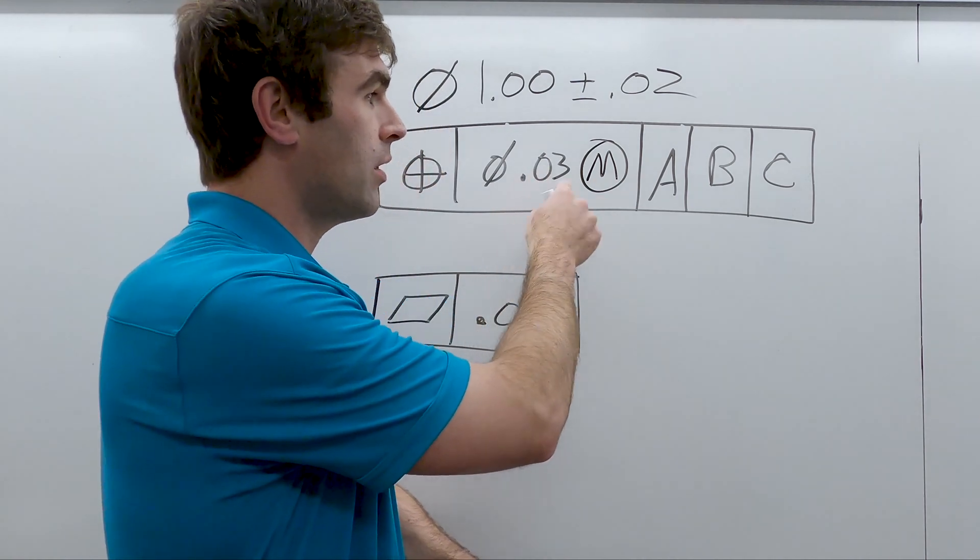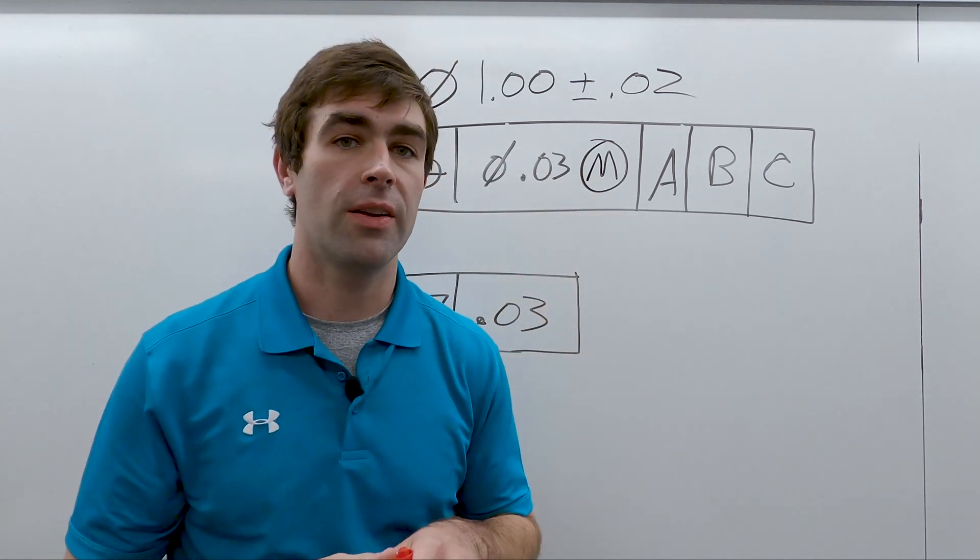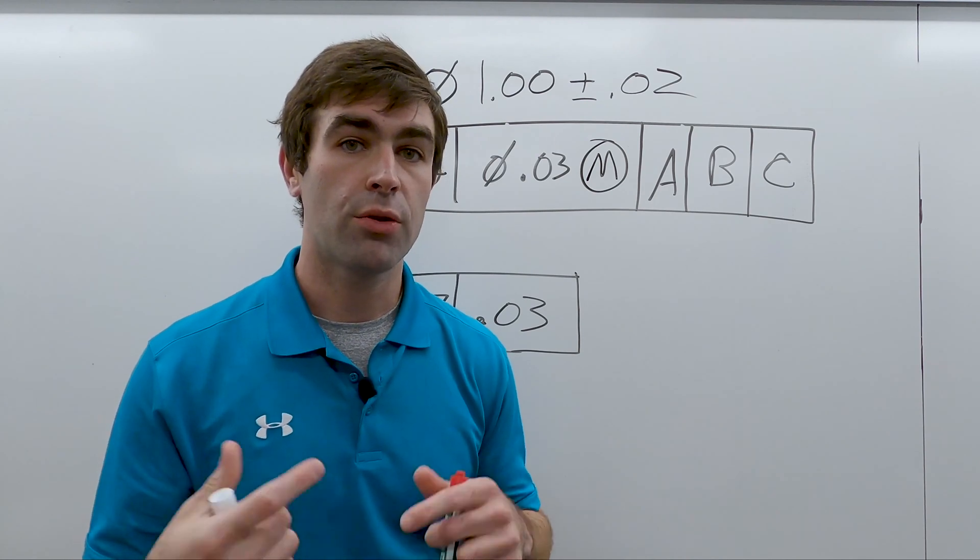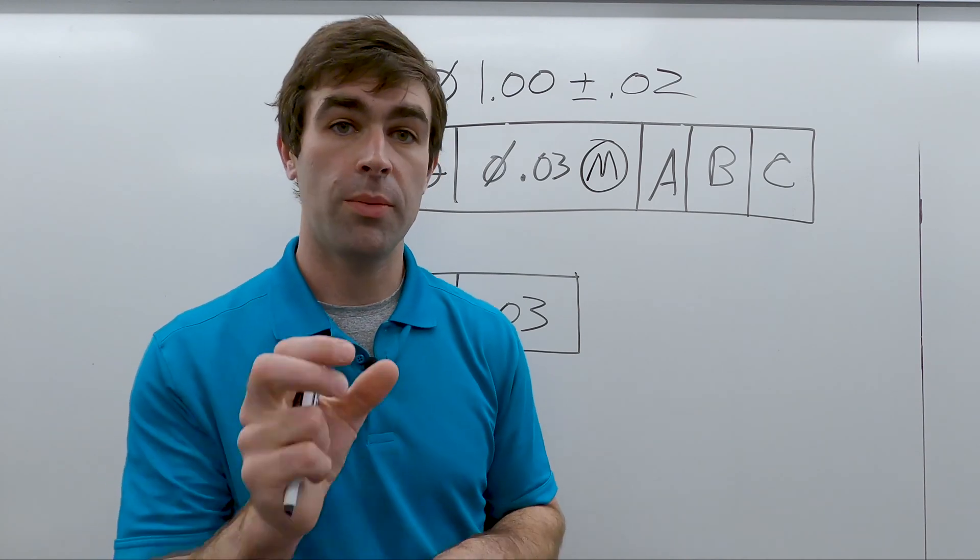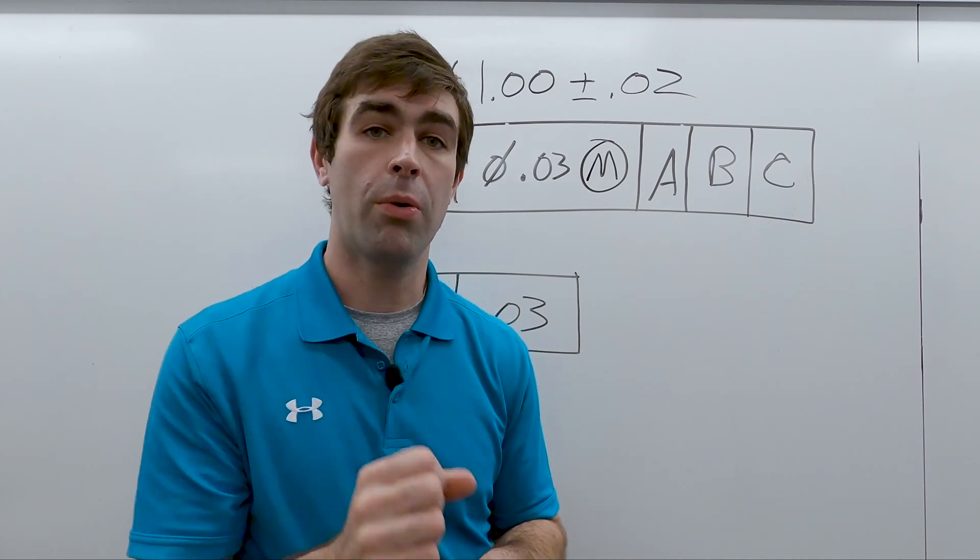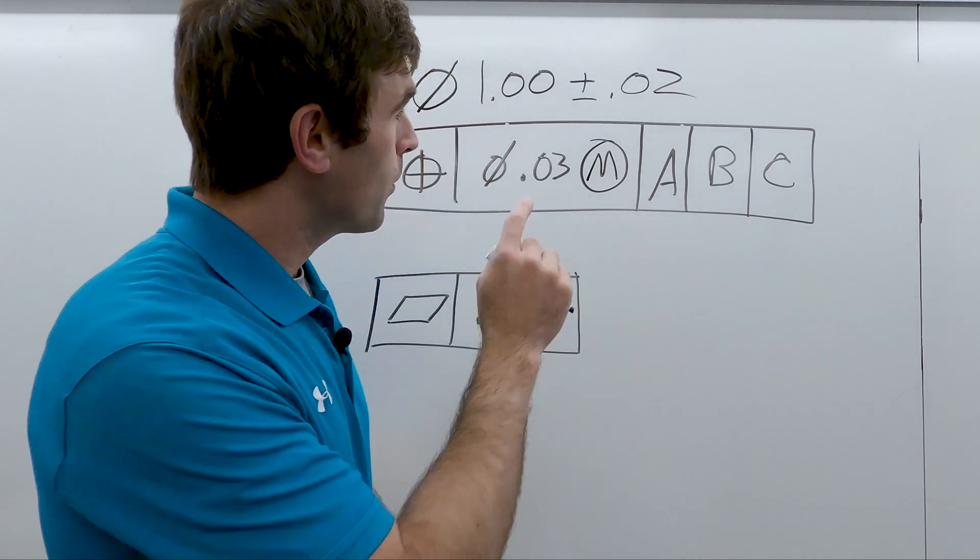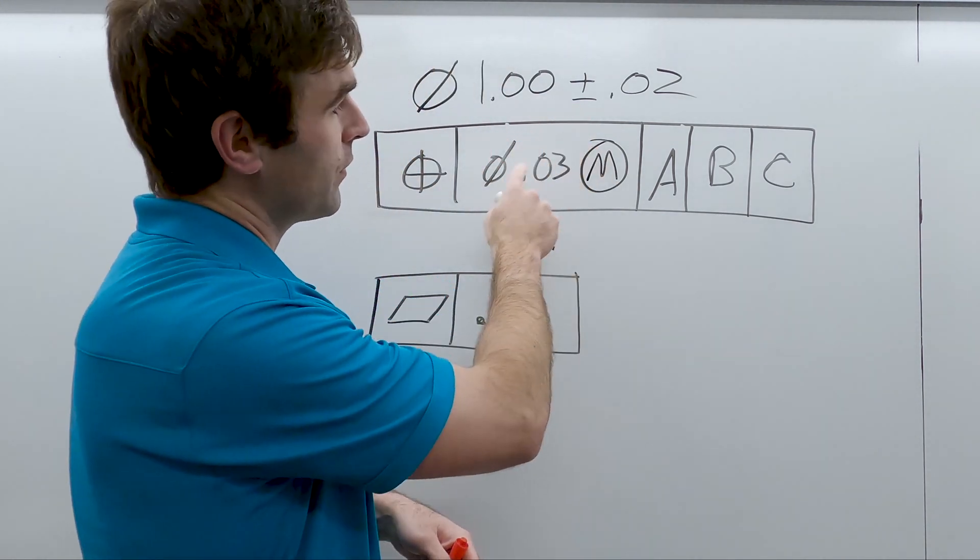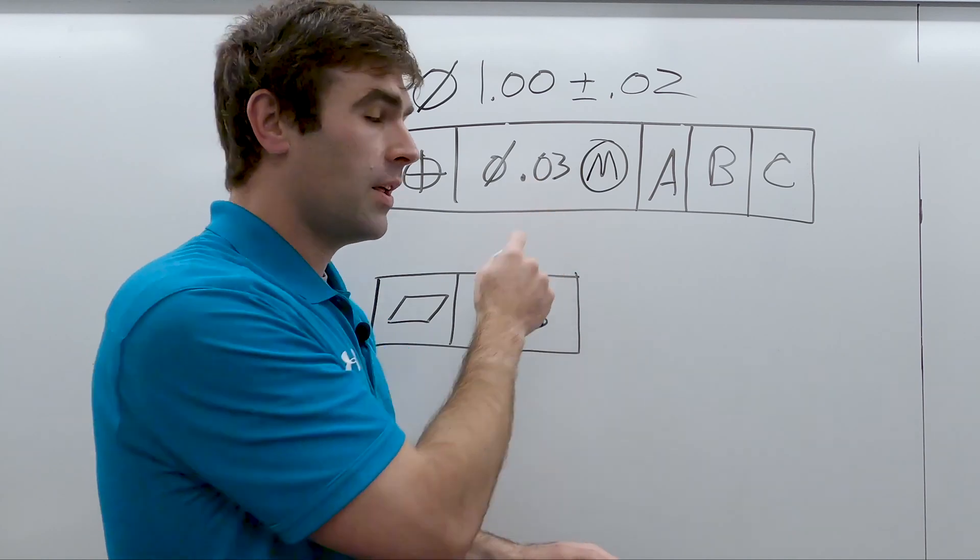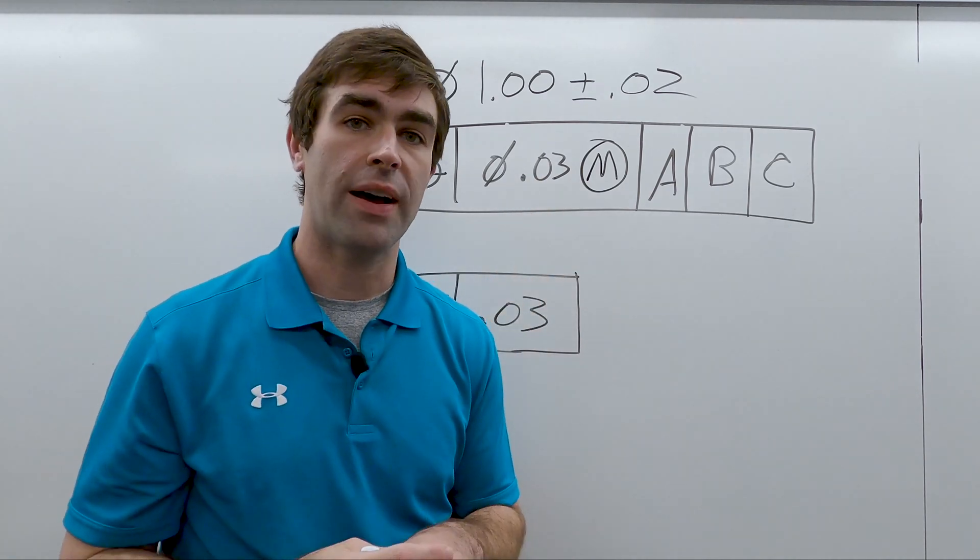What this MMC does is read it like this: you have 30 thou only when the part is at MMC. So for a hole, MMC is the smallest hole, 0.98. So at 0.98, this feature comes in there, you have 30 thou of locational tolerance.